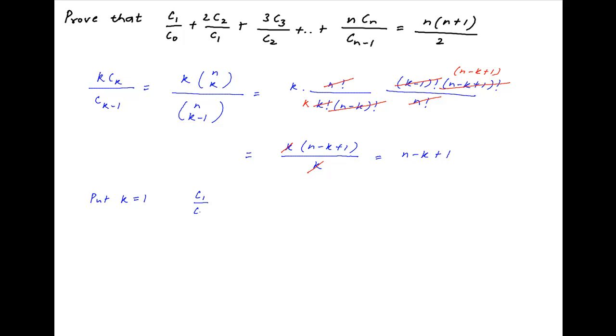the series c1 upon c0 is equal to n. Put k is equal to 2, the second term of the series 2 times c2 upon c1 is equal to n minus 1. k is equal to 3 implies that the third term of the series is equal to n minus 2.